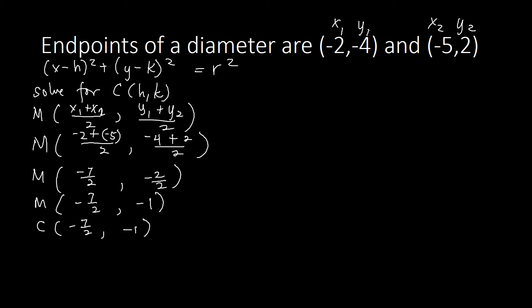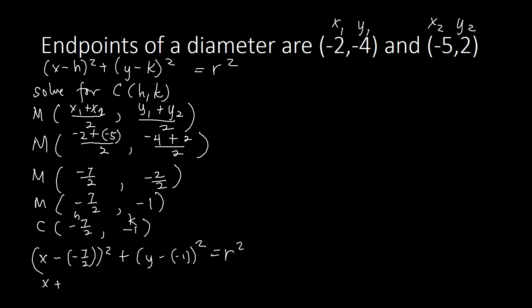Now we plug the center into the standard equation. With h = −7/2 and k = −1, we have: x minus negative 7/2, squared, plus y minus negative 1, squared, equals r squared. Simplifying the double negatives, this becomes: x plus 7/2, squared, plus y plus 1, squared, equals r squared.